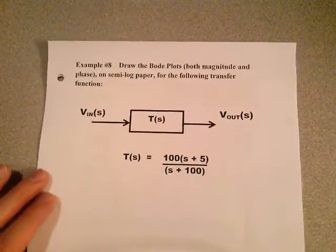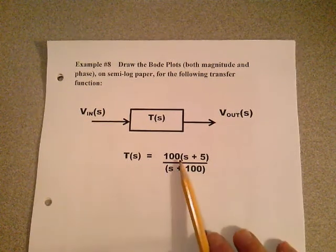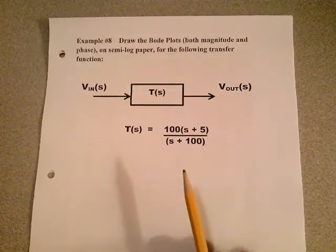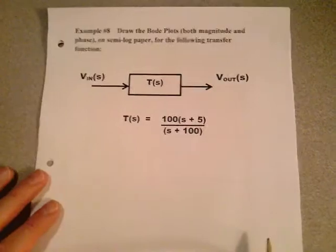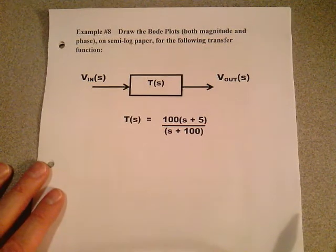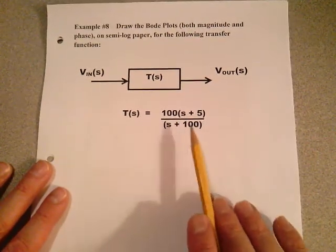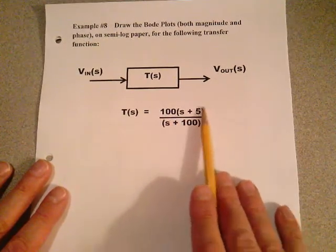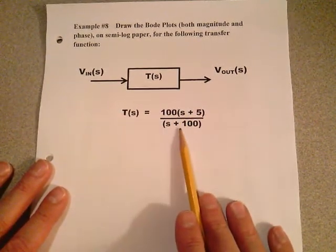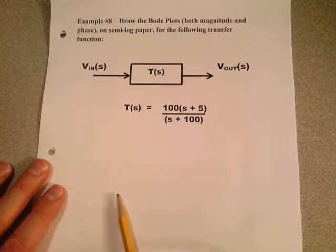Example number 8. Draw the Bode plots, both magnitude and phase, on semi-log paper for the following transfer function. There's no single S term, so you shouldn't have any trouble doing this. These are more like the exam problems — I just want to give you more practice, so make sure you can do at least through the first eight examples. The transfer function is 100 times the quantity S plus 5, over S plus 100. The K0 term is not 100 — you have to get it into standard form with a 1 in each factor to extract the break frequency.